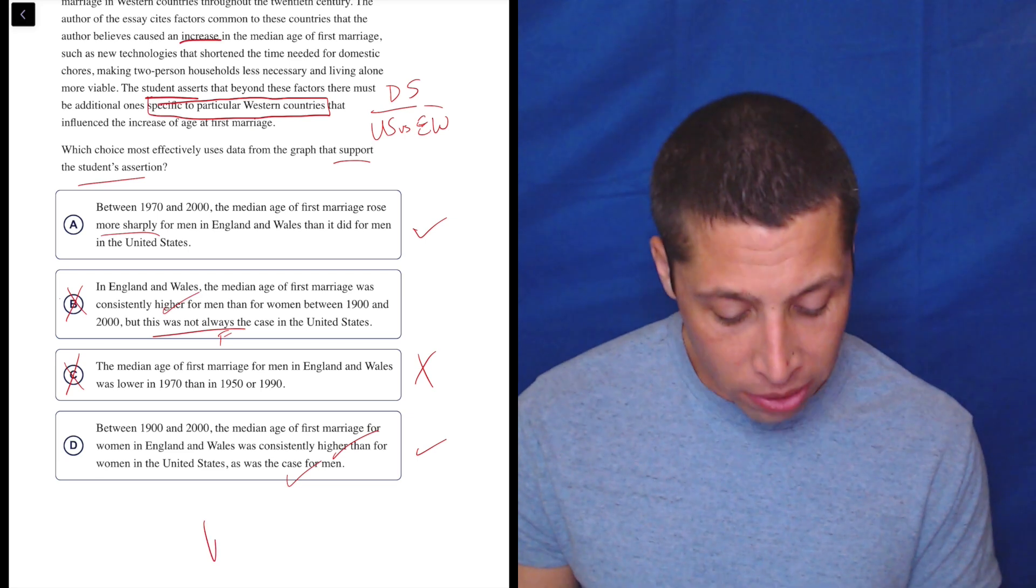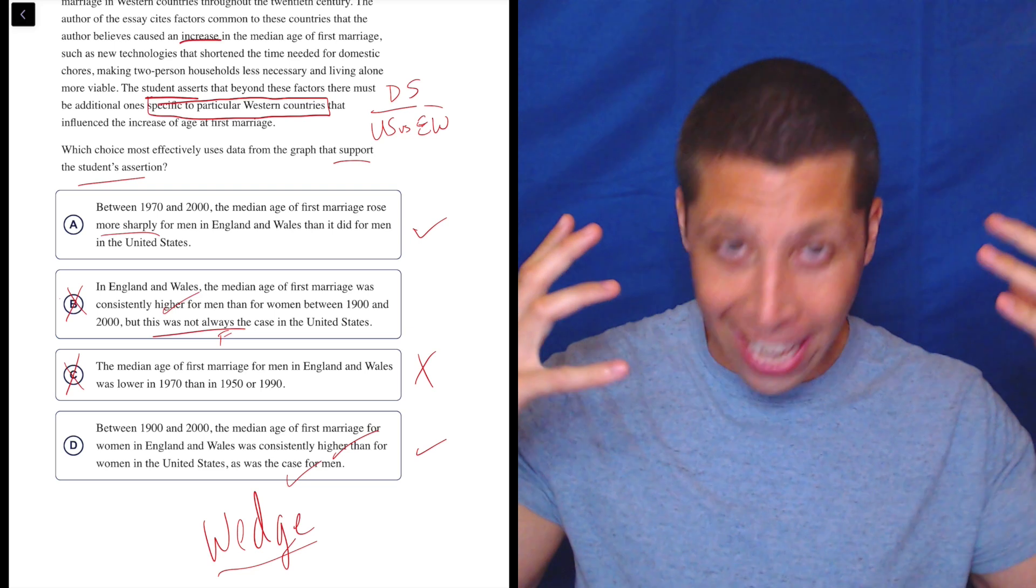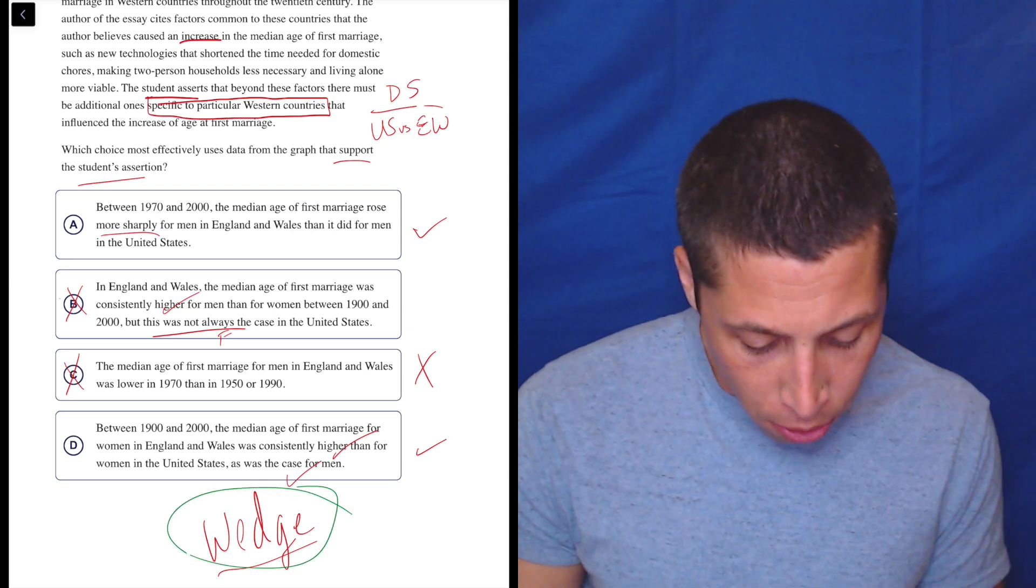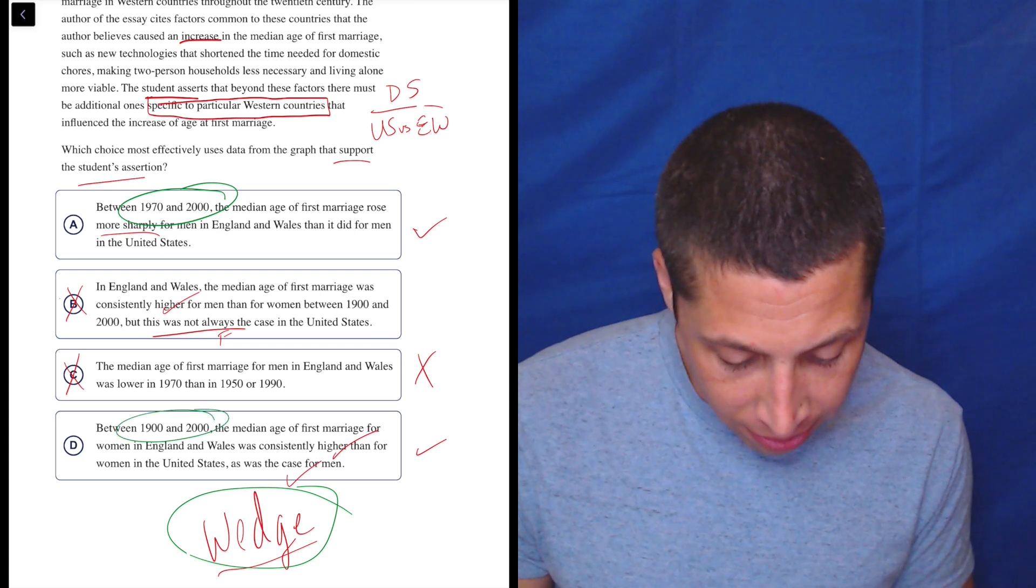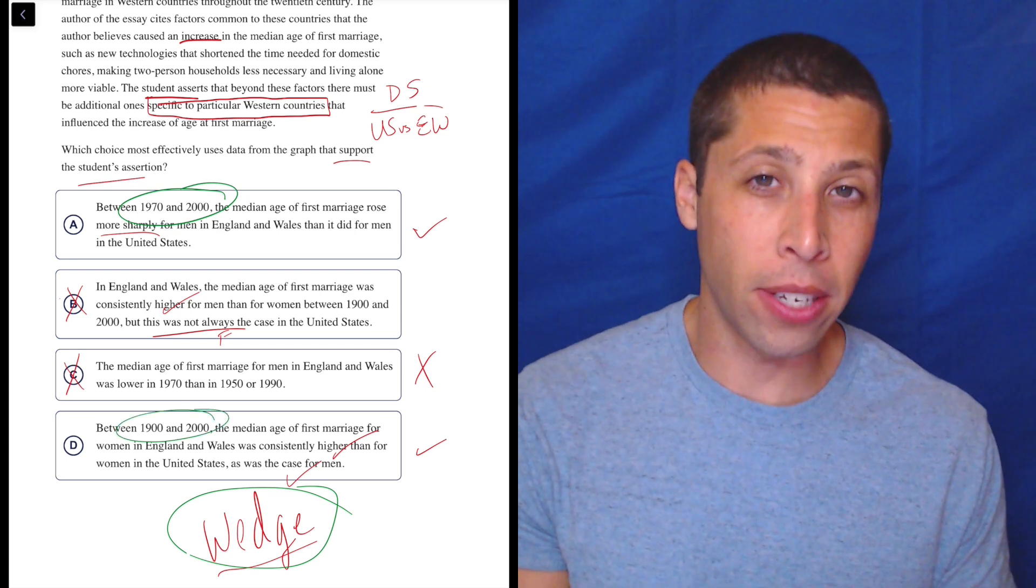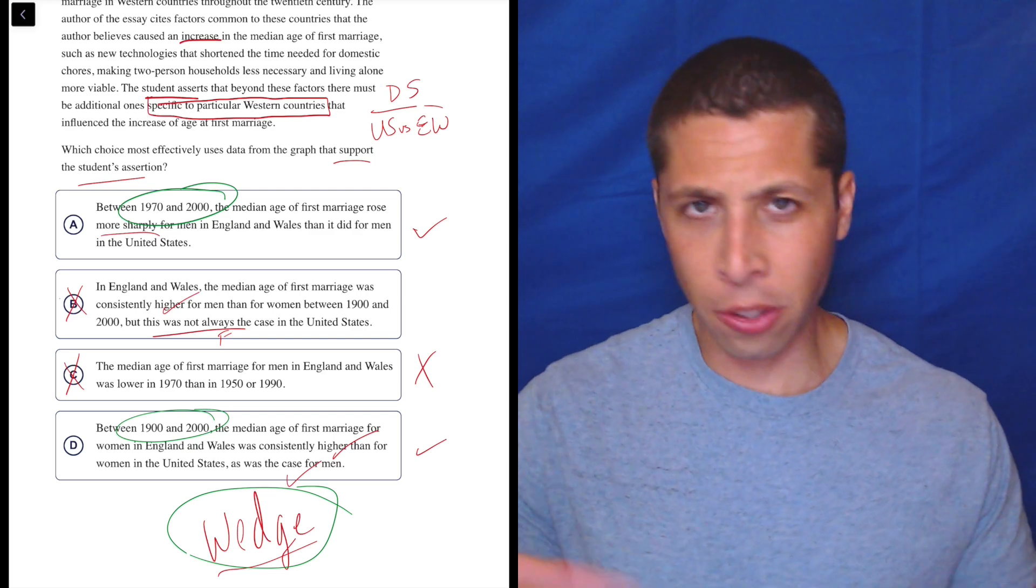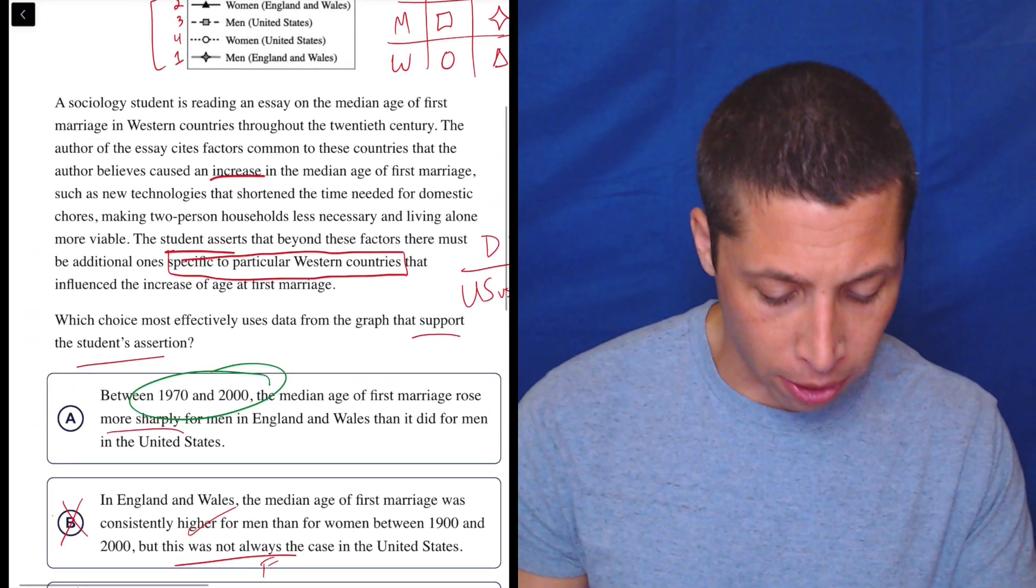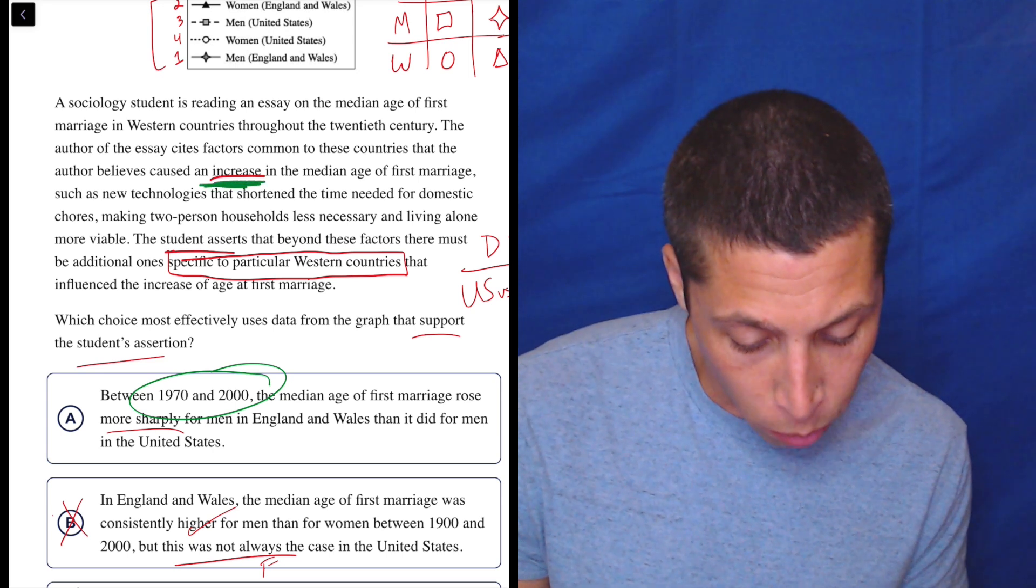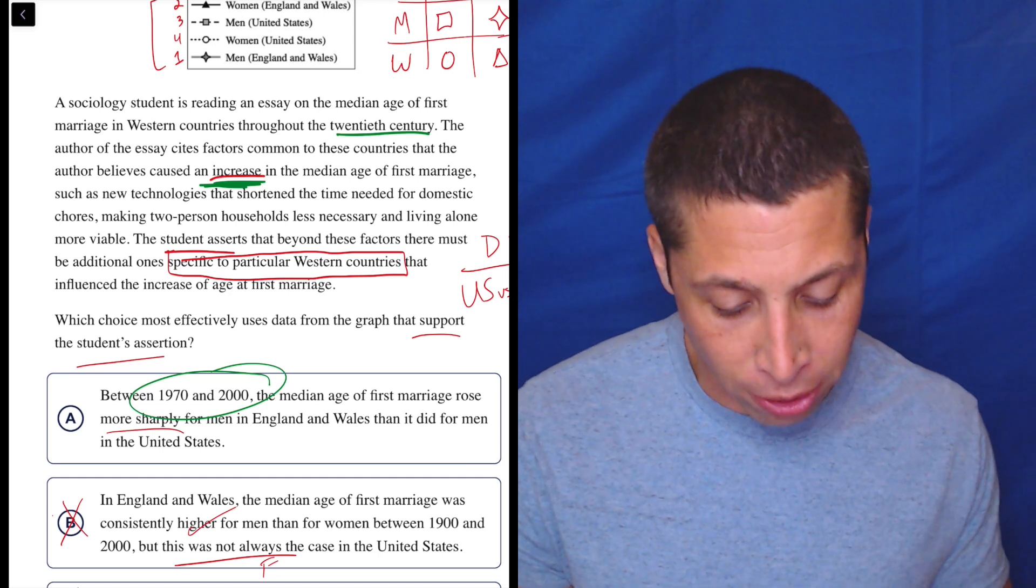We've got two choices that are accurate and in a very preliminary way seem to hit on our dumb summary. So what do we do? Well, I always like to think that there's some sort of wedge. What's the difference? They cannot be the same. There must be some sort of difference. So for me, the wedge here is the years. That seems weird. Choice A is focusing on 1970s starting point and choice D is 1900. So which one does the student care about? Well, if we go here, they're talking about an increase over the course of the 20th century. So throughout the 20th century, the author is citing several factors that lead to an increase.